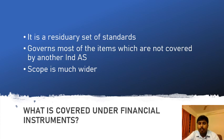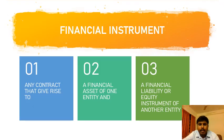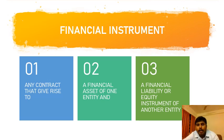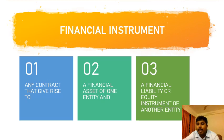Let's try to decode the definition of financial instruments. As set out in IND AS 32, a financial instrument refers to any contract that gives rise to a financial asset of one entity and a financial liability or equity instrument of another entity. This appears to be a simple definition, but it can only be understood if we know four key terminologies.